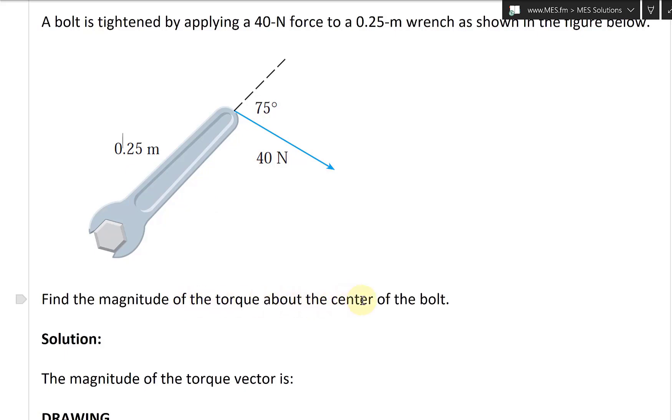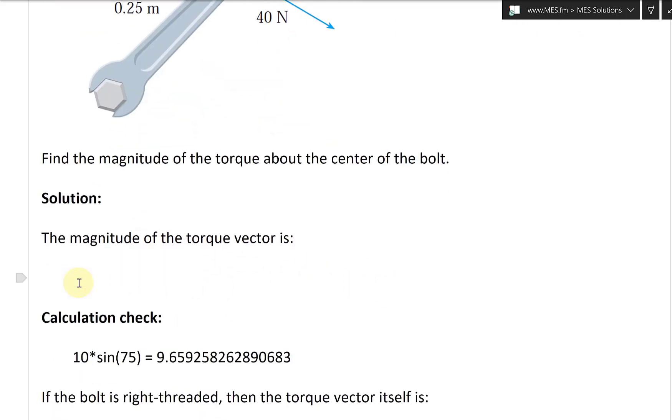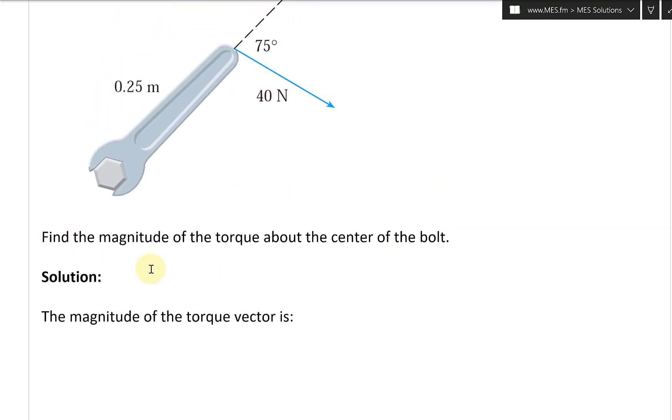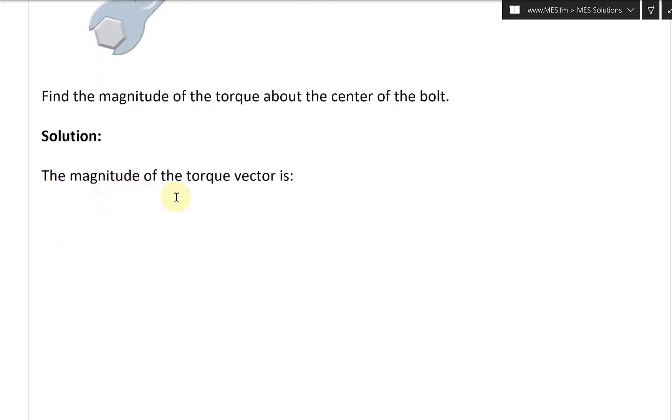And it says find the magnitude of the torque about the center of the bolt. So, solution, let's go here. So the magnitude of the torque vector is, well, we'll just use a cross product. So this is tau, this is the torque, the magnitude of the torque. So the value is equal to magnitude of the cross product, r cross F. This equals 2 using the theorem 2. So this is going to be length of r times by length of F times by sine of 75 degrees.